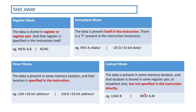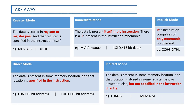MOV A, M is also suitable for indirect mode of addressing because the data is in the M register, which is not a physical location but a memory pointer. The microprocessor goes to the HL register pair, finds whatever memory location it is pointing to, picks up the value from that location, and puts it into the accumulator. So the address is not directly given in the instruction — it is indirect mode. For implicit mode, if a particular instruction has no operand following the mnemonic, then it is likely in implicit mode. XCHG and XTHL are two very good examples.